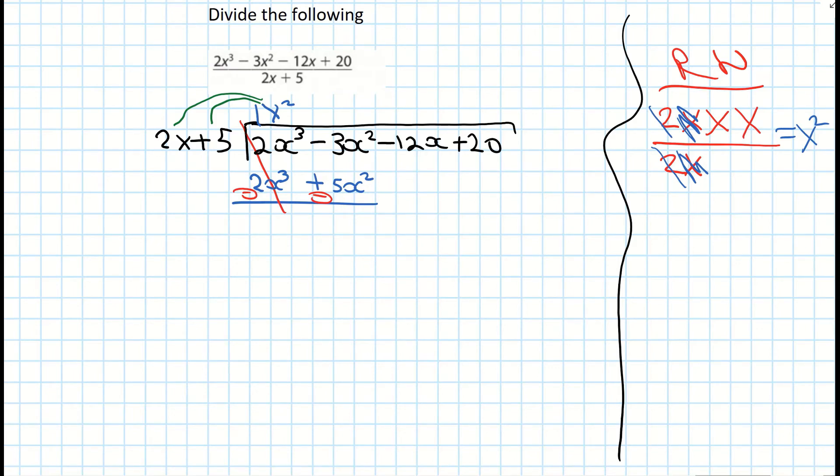And then the 2x cubed subtract 2x cubed is 0. And then we come to the center here and it's minus 3x squared minus 5x squared which is minus 8x squared. Use calculators if needs be. We then bring down our minus 12 and our plus 20 and that's coming down here. So minus 8x squared minus 12x plus 20.